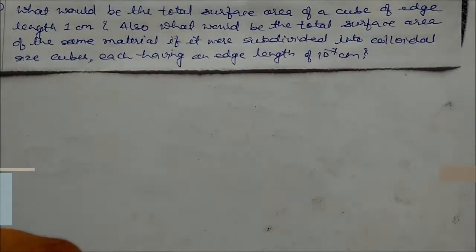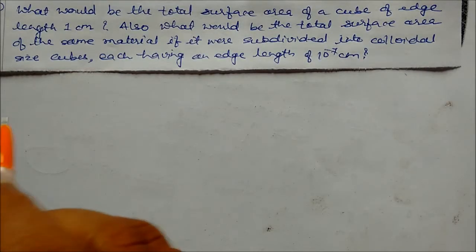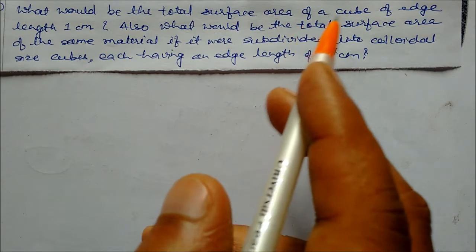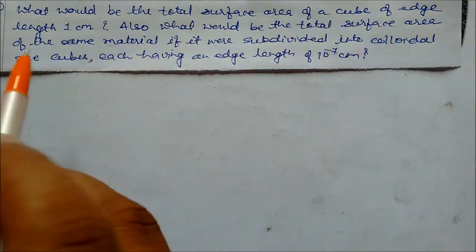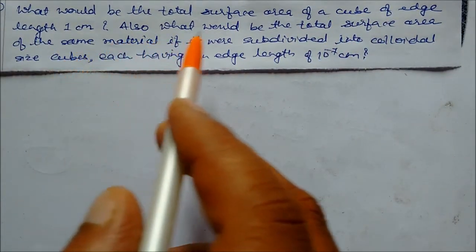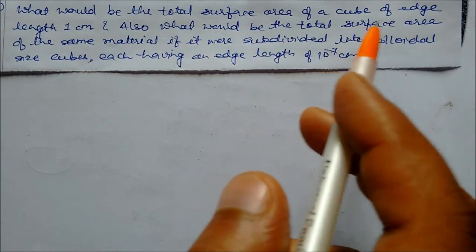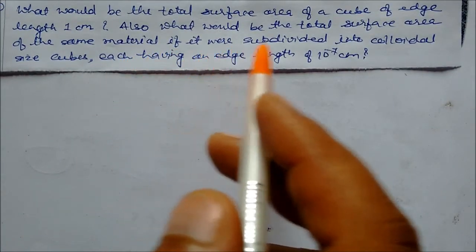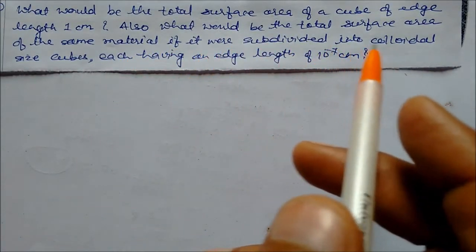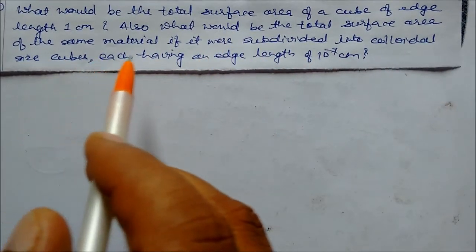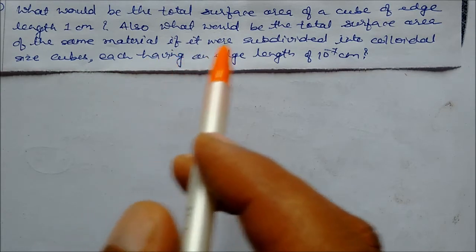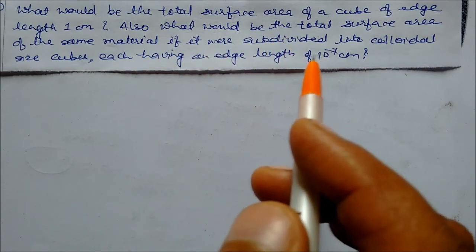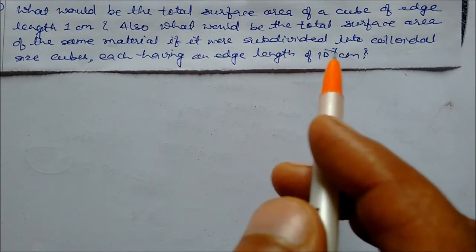Now we will see some problems based on surface chemistry. What would be the total surface area of a cube of edge length 1 cm, and what would be the total surface area of the same material if it were subdivided into colloidal size cubes, each having an edge length of 10 to the power minus 7 cm?